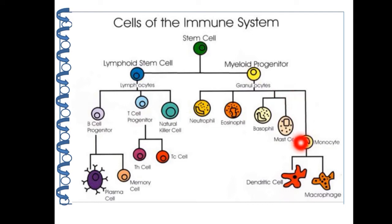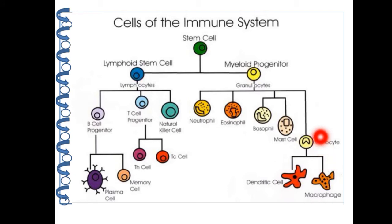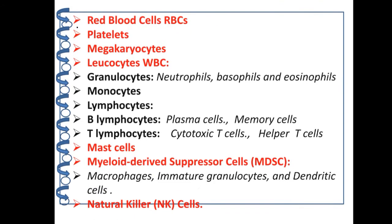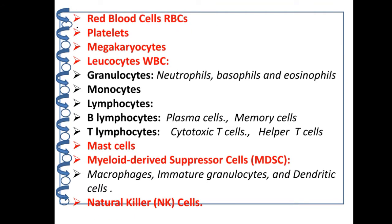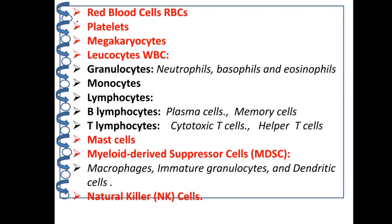Monocytes are also formed from myeloid progenitors, and monocytes give rise to dendritic cells and macrophages. So all these are the immune cells, and you can tabulate them as: RBCs, platelets, megakaryocytes, leukocytes, mast cells, myeloid-derived suppressor cells, and natural killer cells.